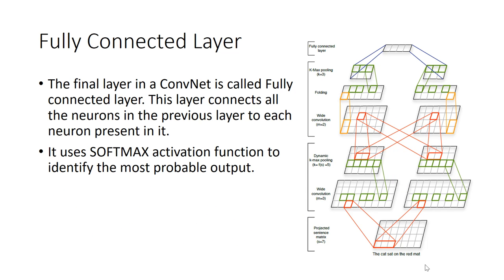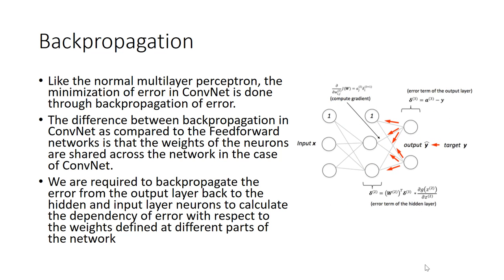The final layer is fully connected layer. The fully connected layer uses a softmax function to identify the most probable output. This layer connects all the neurons in the previous layer to each neuron present in it. With this, our architecture of CNN ends. Now we look into the backpropagation. The backpropagation in CNN is very similar to the backpropagation in traditional neural networks.